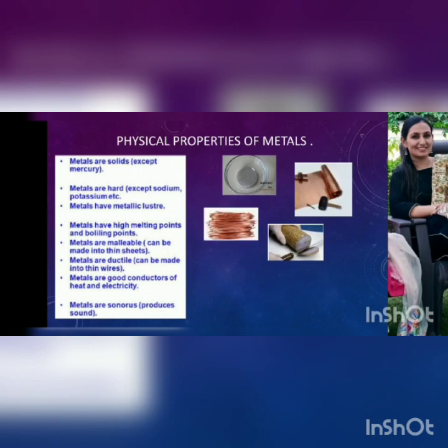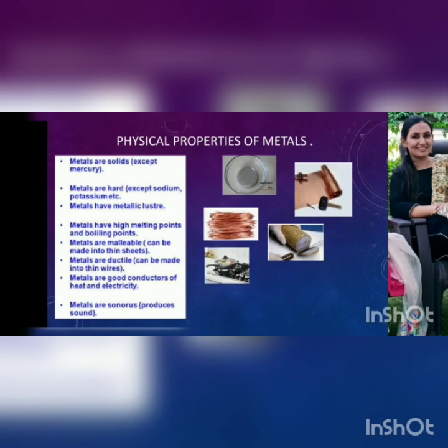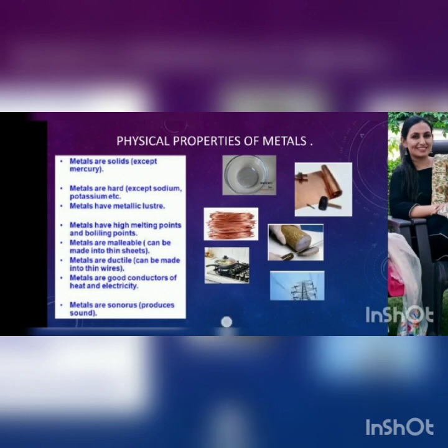Metals also show the property of ductility, which means metals have the ability to be drawn into wires. Metals like copper, silver and aluminium can be easily drawn into wires, and this property is called ductility. Metals are good conductors of heat and electricity. That is the reason metallic utensils are made up of metals and they are provided with wooden or plastic handles, because both wood and plastic are insulators. The electric wires are also made up of metals.